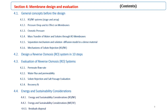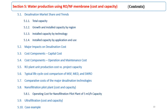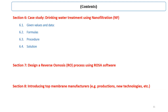In Section 5, cost and capacity in water production using reverse osmosis and nanofiltration membranes will be discussed. Concepts such as market capacity, capital cost, and operation and maintenance cost are covered, with case examples at the end. Section 6 presents a case study using nanofiltration for water production.